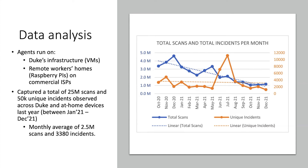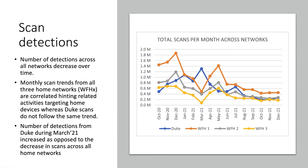Looking at the breakdown of total scans across different networks: the blue line is for Duke and the other three colors are work-from-home networks. In March there's an increase in scanning activity at Duke whereas a decrease across all work-from-home setups. Looking at the trends across all months, work-from-home network activity is correlated — they increase or decrease together — whereas at Duke, scan activity does not follow the same trend. This indicates that scanning activity is dependent on your specific network landscape.